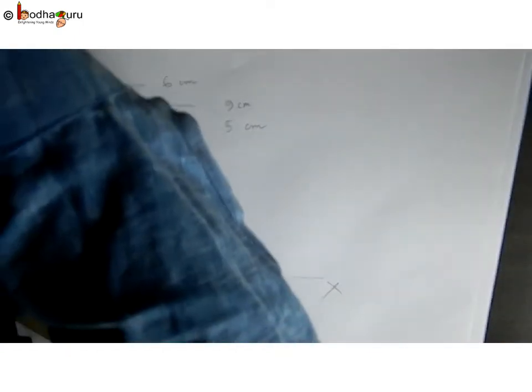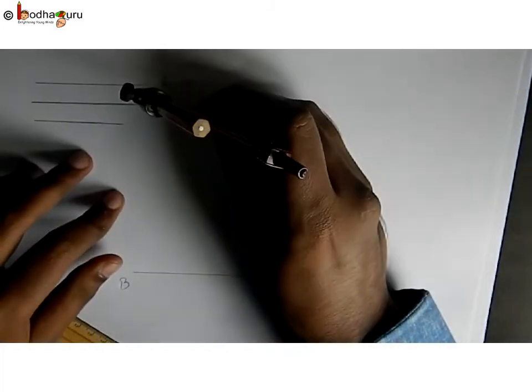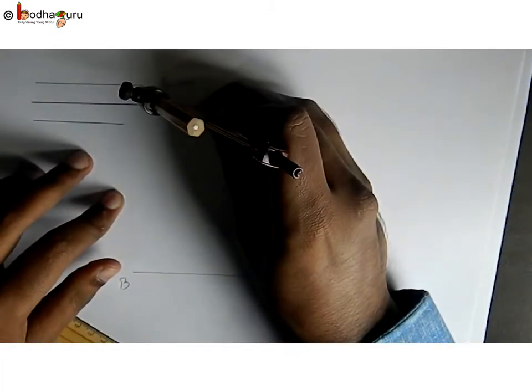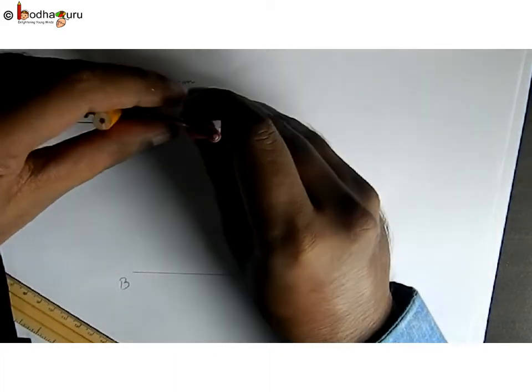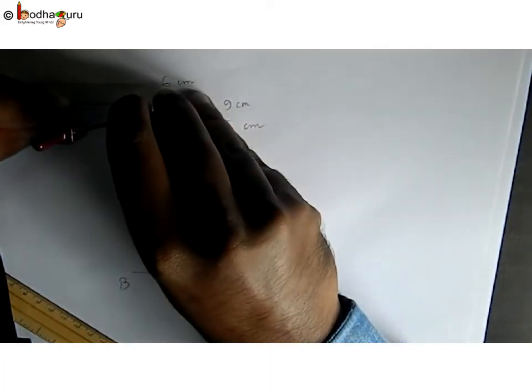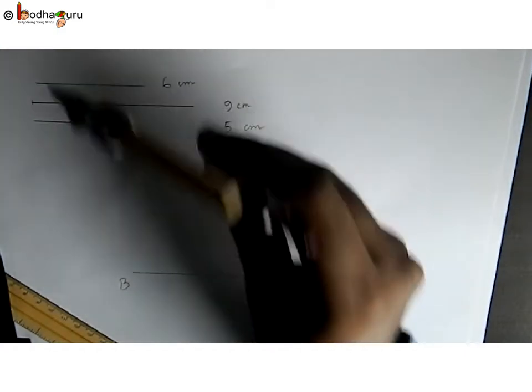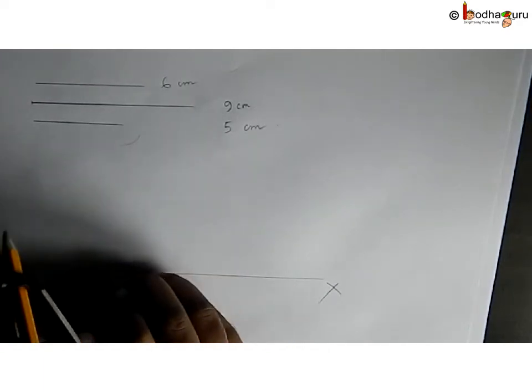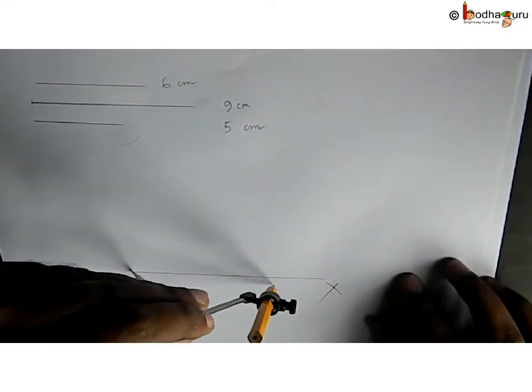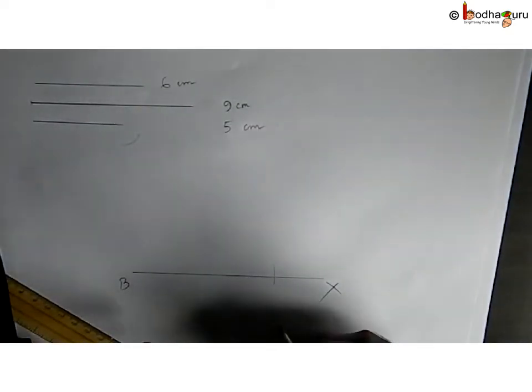First we draw a line BX, a long line. We take 9 cm radius in compass using the 9 cm line segment we drew as reference. Put needle on B and cut off a 9 cm part on this line. This is BC.